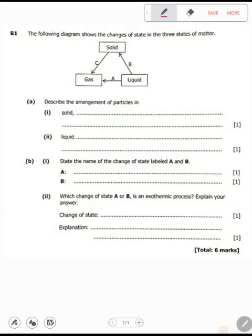This is science paper 2, chemistry B1 question. The diagram shows the changes of state in the three states of matter: solid, gas, and liquid. The changes are labeled A, B, and C. Describe the arrangement of particles.